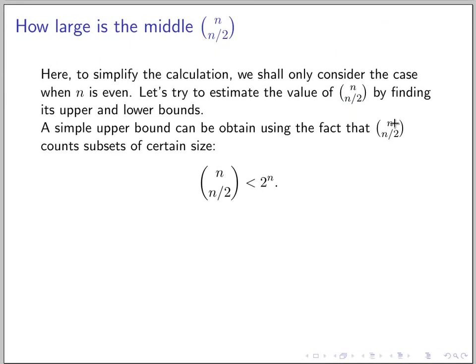So the simple upper bounds of this can be obtained by, we know that this is counting the set of size n over 2. And this is the number of all subsets of a set of size n. So the number of subsets of particular size has to be smaller than the number of all subsets. So we get these upper bounds.